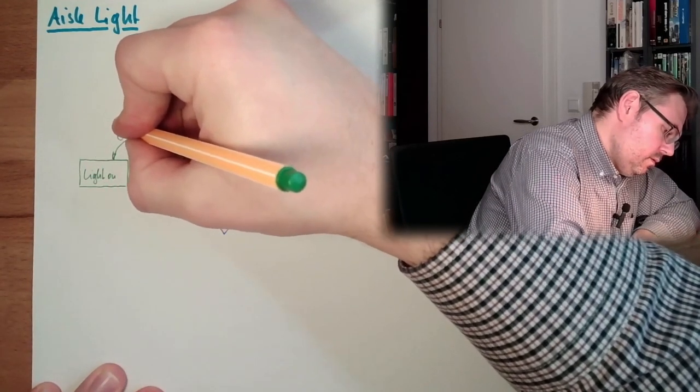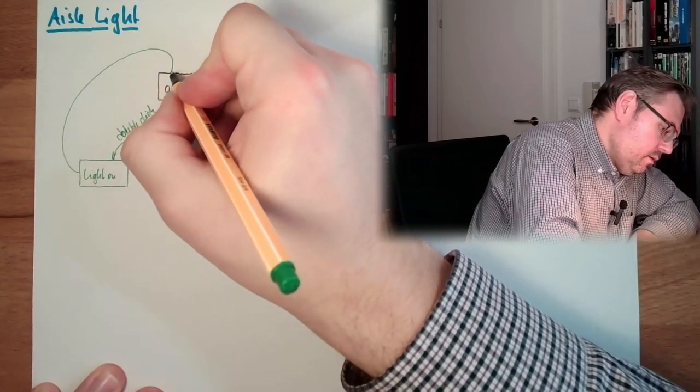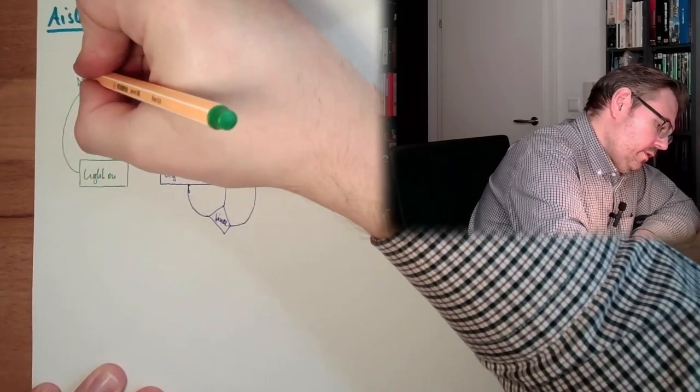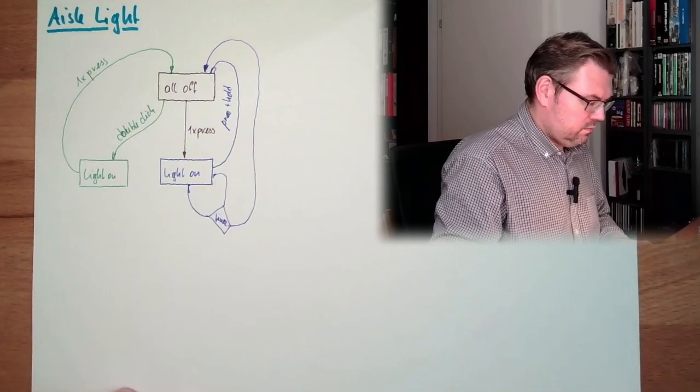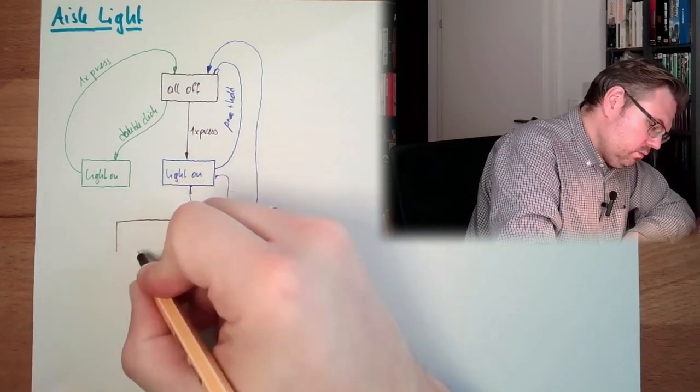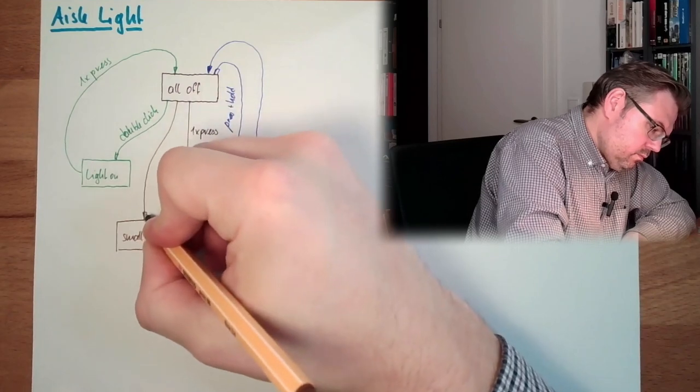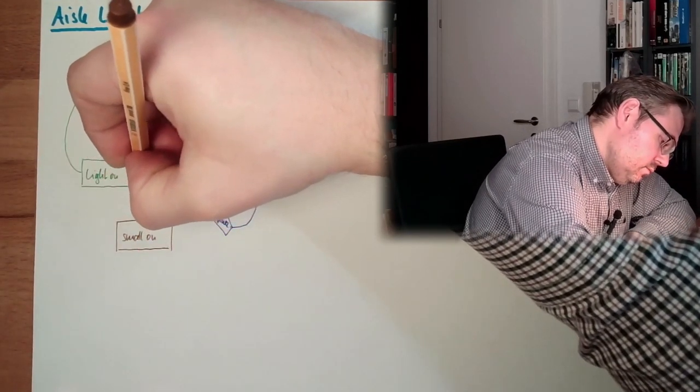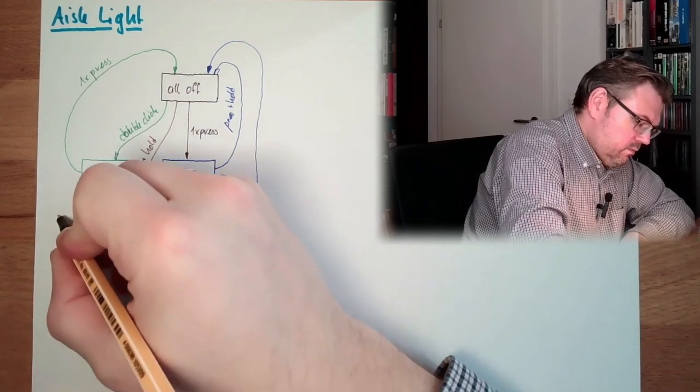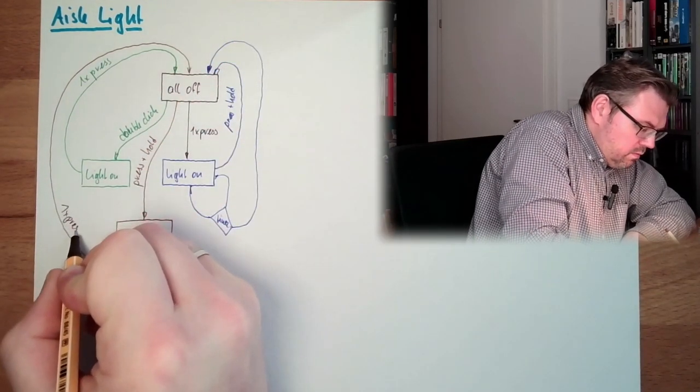Then I have here light on. Double click coming back here. One time press. And here we'll call small on. Press and hold. Small on, and one time press turn them off again.